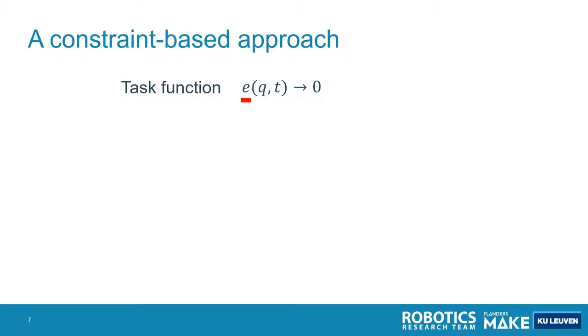We are going to implement these skills or behaviors using a constraint-based approach, and more specifically a task function approach. This task function is an expression of what we want to maintain or achieve. This can be something related to the geometry of the task, such as maintaining some distance, but it can also be something related to the input sensors of the robot system.